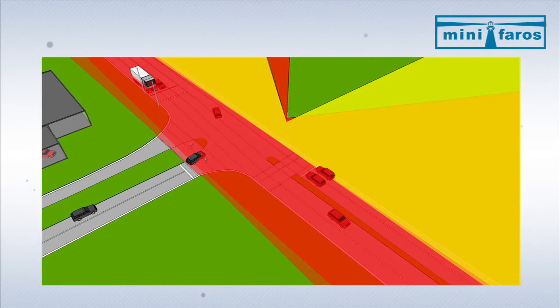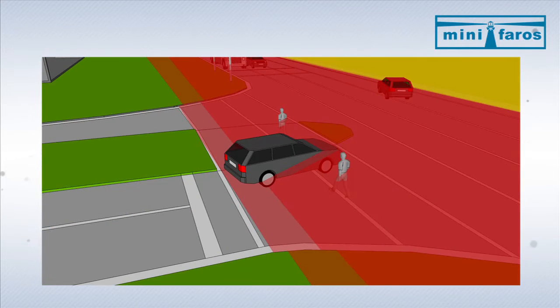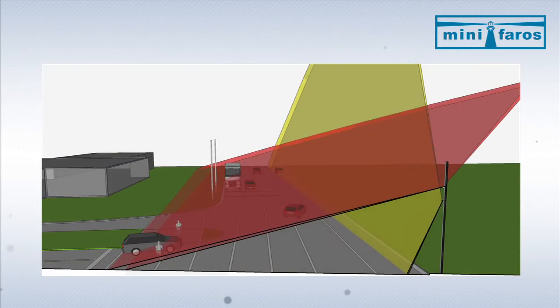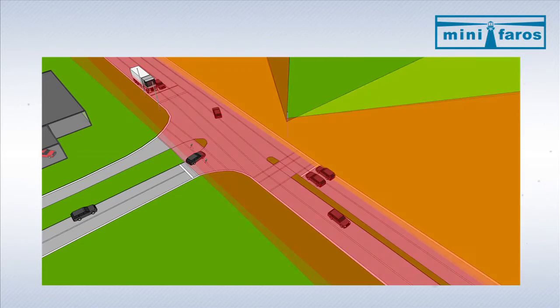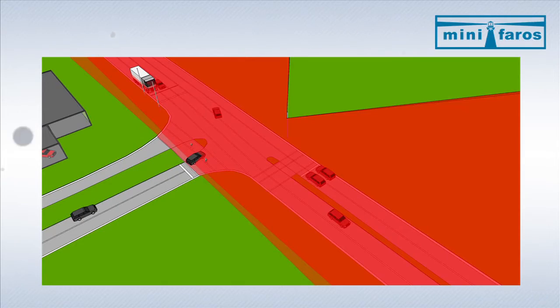Additionally to the in-vehicle systems, the MINIFAROS laser scanner is suitable for cooperative systems and can be installed on the infrastructure to track and classify road users, transmitted via wireless communication to vehicles equipped with the necessary communication infrastructure.